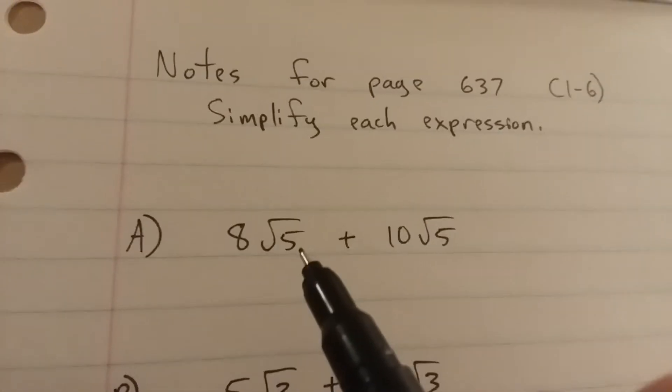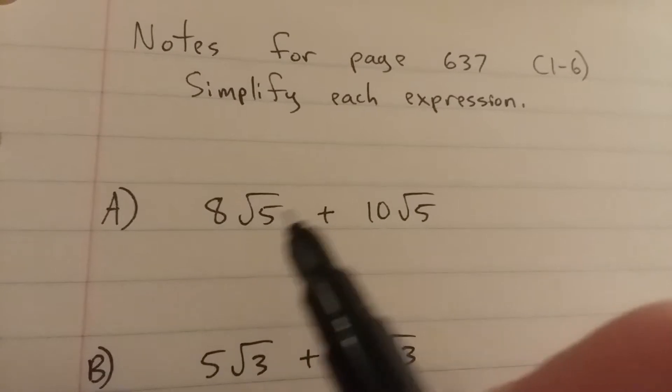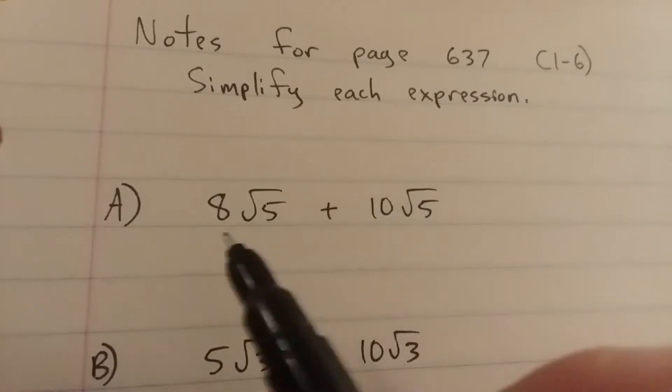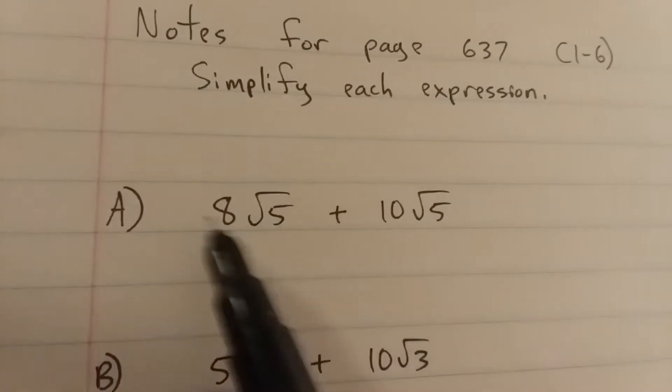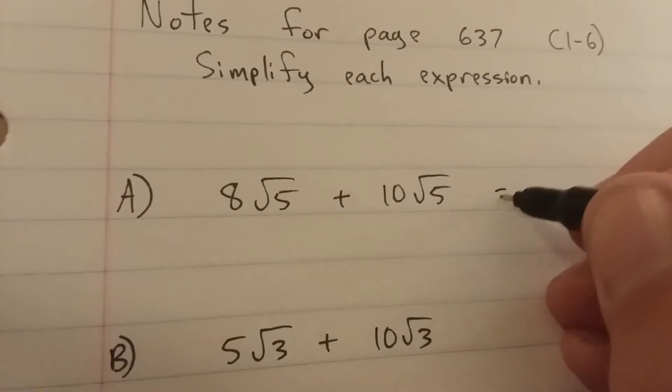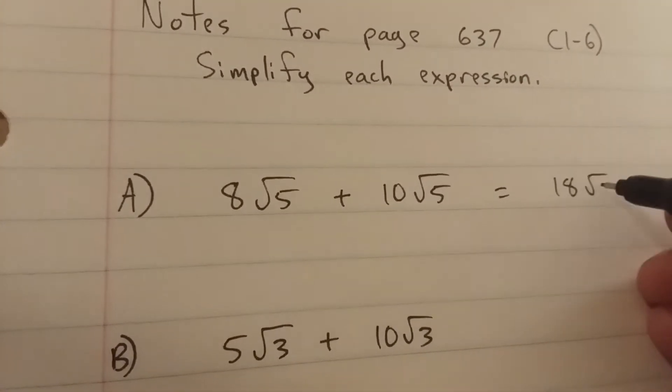If you look at our first example here, if you notice, under the root, we have 5 and 5. So we can combine these. You just add the coefficients together, you get 18 root 5.